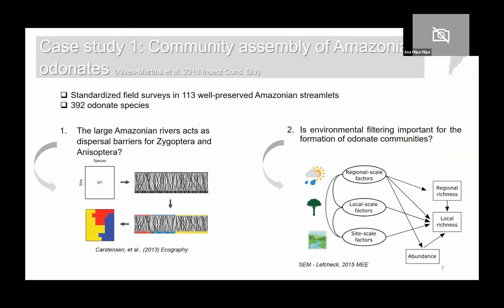For that, I used a methodology called network modularity analysis to organize communities by their dissimilarity. Then I used a methodology called structural equation models to understand the relationship between different factors affecting species richness in local communities.